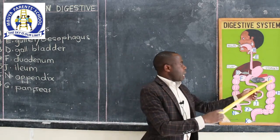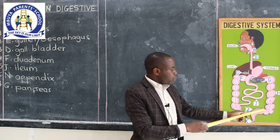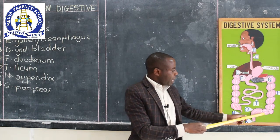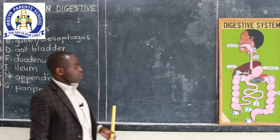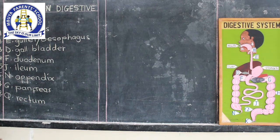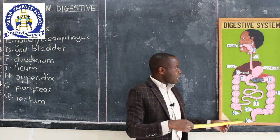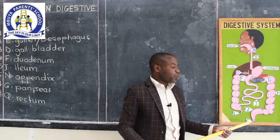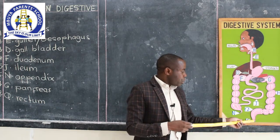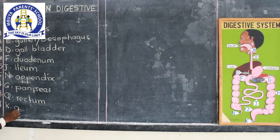The food continues and reaches part Q — from here up to here — which is what we call the rectum. When the rectum is full, you pass out what has not been absorbed by the body, and that is what you call feces, and it passes out through part K — the anus.